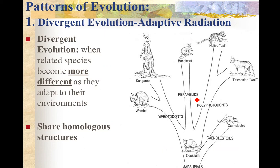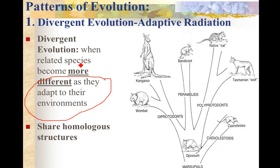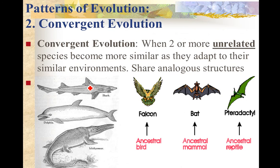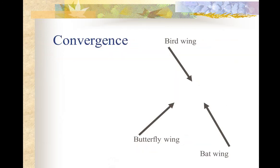Divergent evolution is when species are more closely related, and as they adapt to changes in their environment, they share common homologous structures — that's what makes them more closely related, even as those structures help them adapt. Evolution is not organisms saying 'I'm going to change' — that's what Lamarck would say. Darwin would say there's variation in species and favorable traits live on. We're probably going to start saying gene expression, or genes turning on and off, rather than vestigial structure. Here's convergent evolution: distantly related organisms look alike because they adapt to similar habitats.